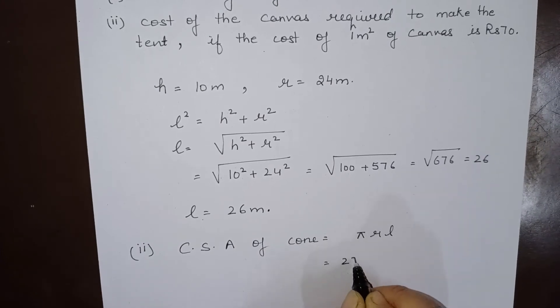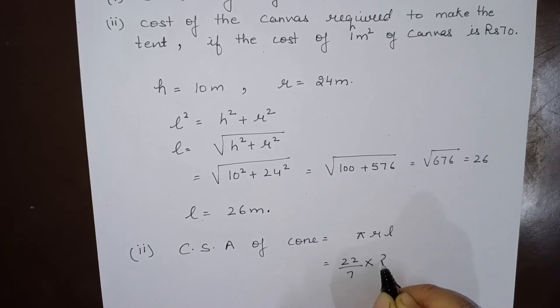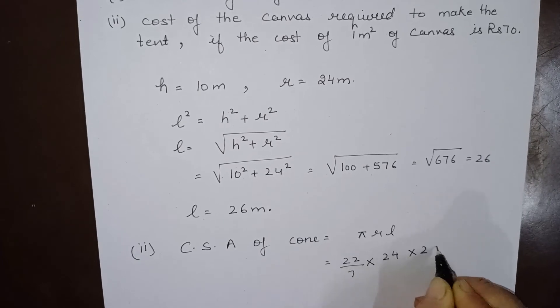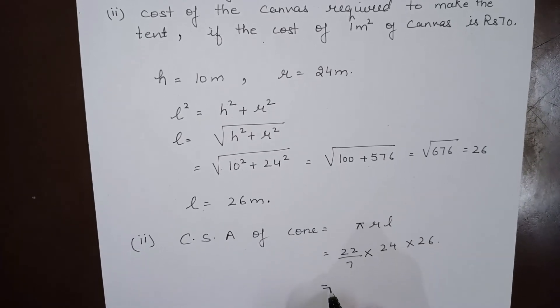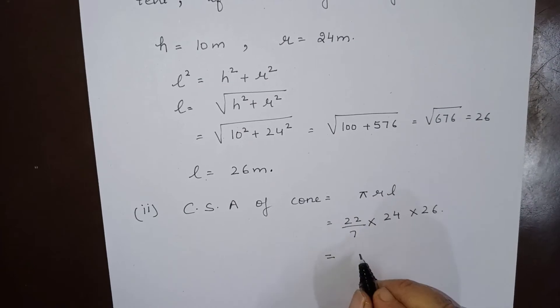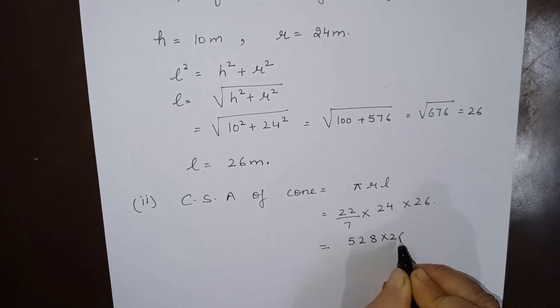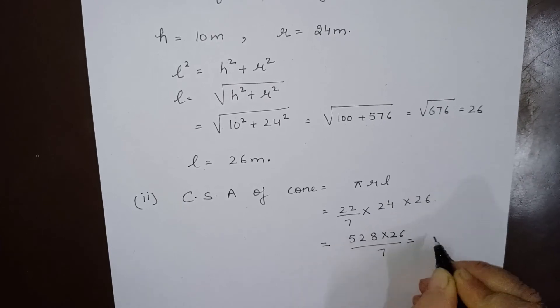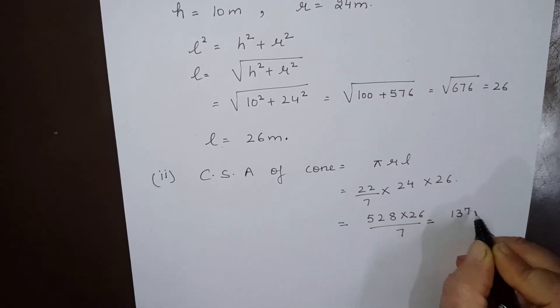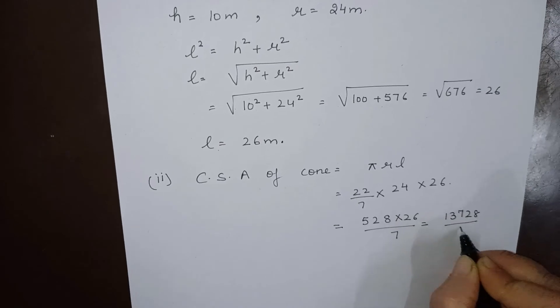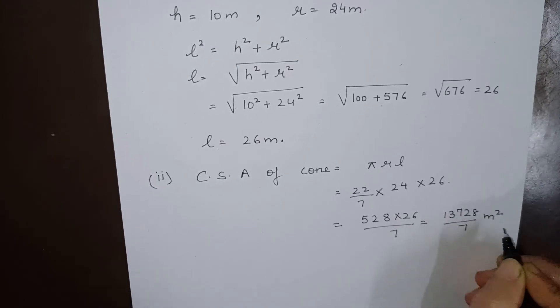So 22 by 7 into 24 into 26. So let us calculate it: 22 into 24 will be 528, multiplied by 26 over 7, and when they are multiplied we will get 13728 over 7 meter square.